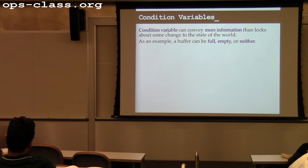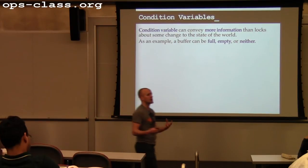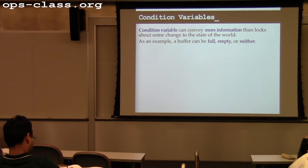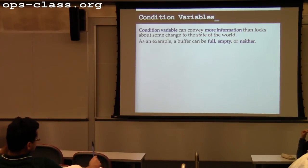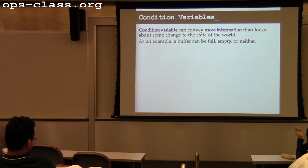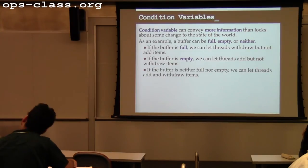Condition variables are used to convey more information than locks. Locks are just locked or unlocked — they can't represent more complex state. Condition variables are used to represent state that can be in two, three, or n different states, where threads want to know when certain things have changed. For example, a buffer can be full, empty, or have some data in it. Different threads care about different states.